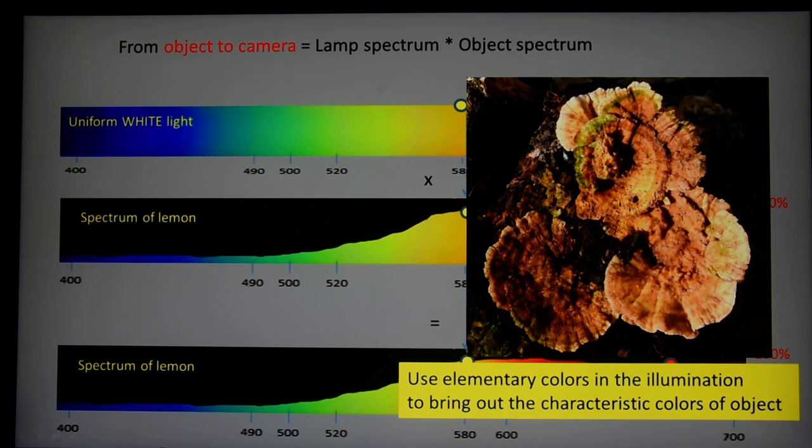If you have objects that have a specific own color, like this yellow mushroom, make sure you put some yellow light on it so that the yellow can come out of the picture very nicely. Or if you have a red steak, use some red in the light.